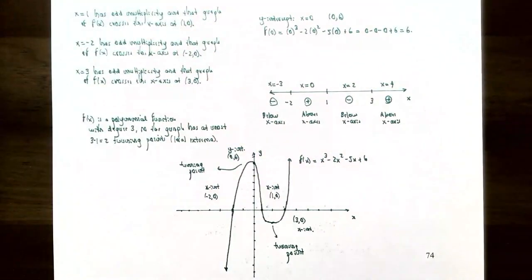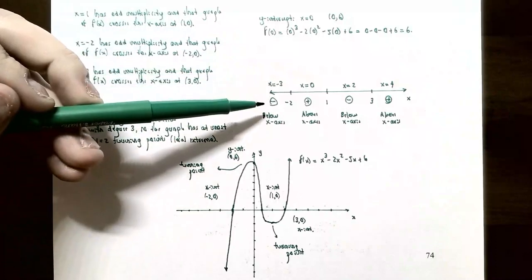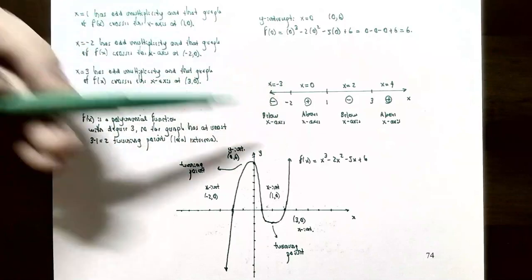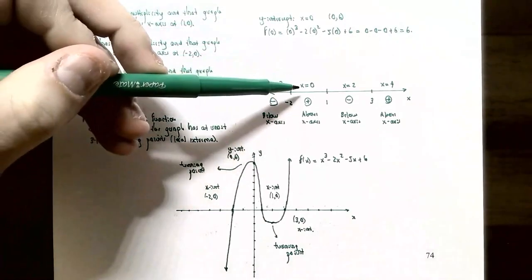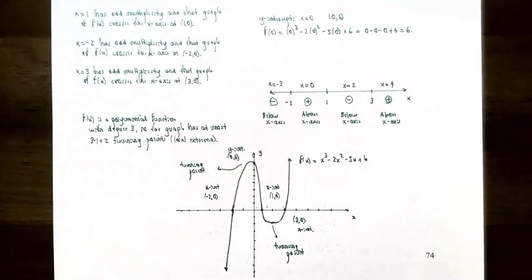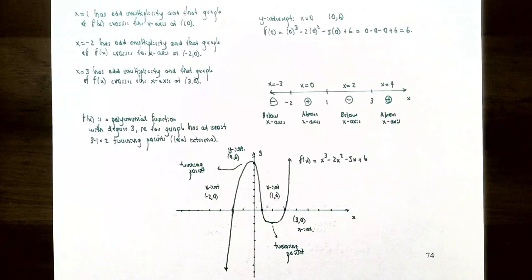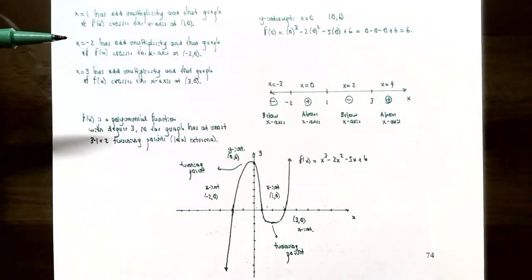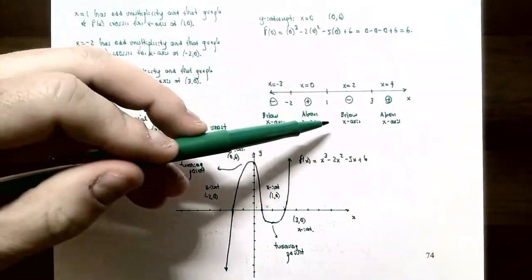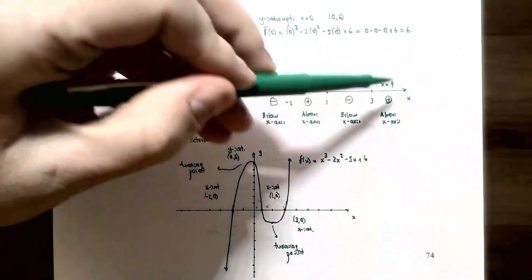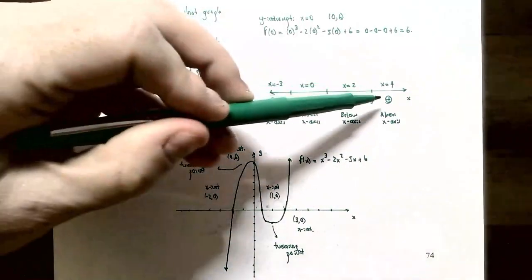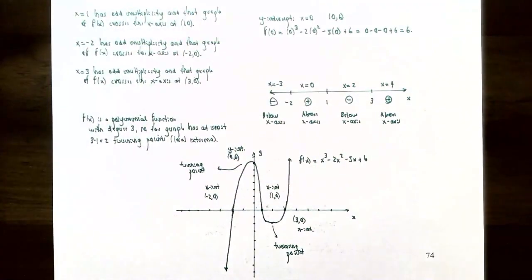Substitute each test value into the original function. Plugging in x = -3 gives a negative y-value, so the graph is below the x-axis when x < -2. Plugging in x = 0 gives the y-intercept of positive 6, so the graph is above the x-axis between -2 and 1. Plugging in x = 2 gives a negative y-value, so the graph is below the x-axis between 1 and 3. Plugging in x = 4 gives a positive y-value, so the graph is above the x-axis for x > 3.